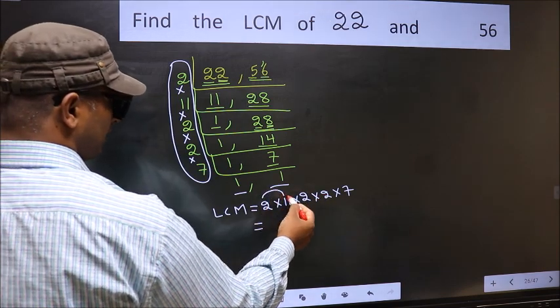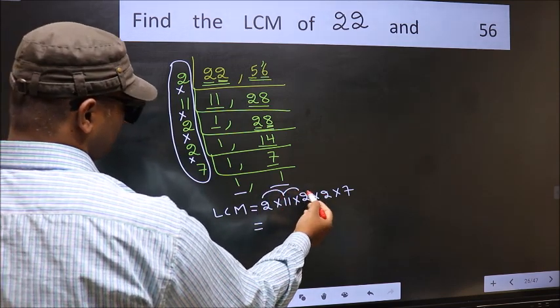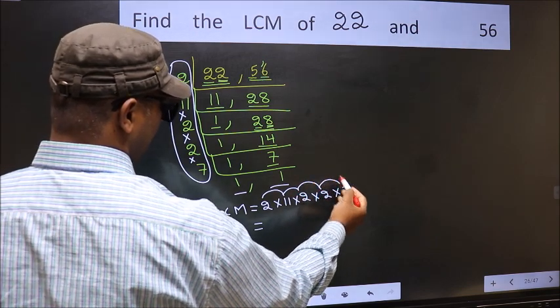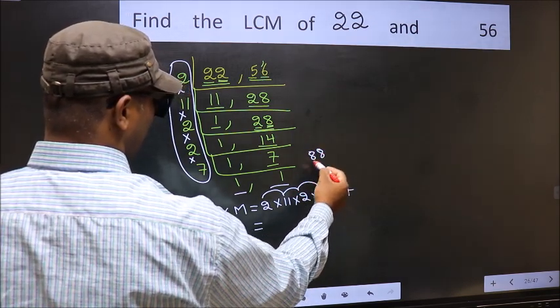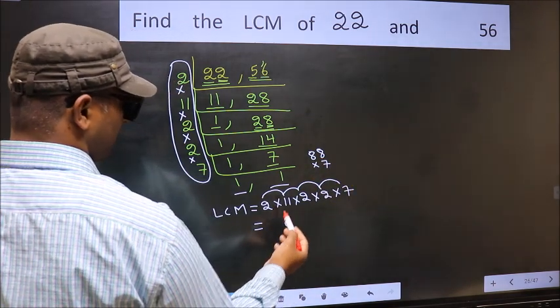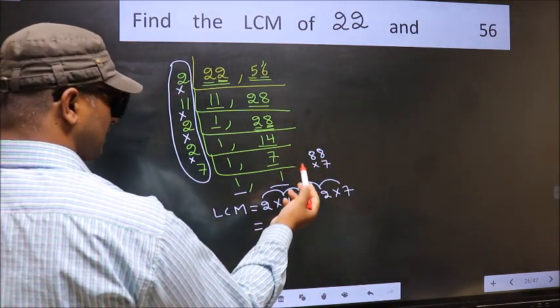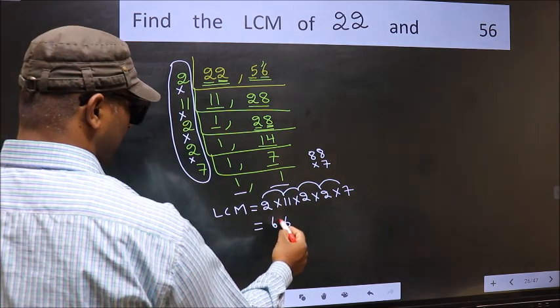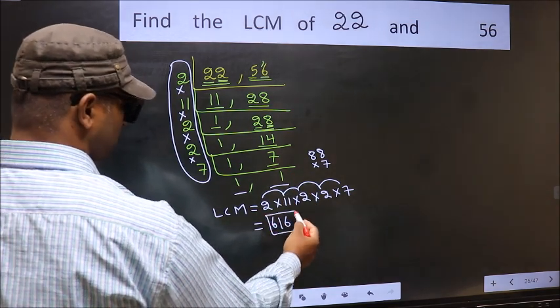2 into 11 is 22. 22 into 2 is 44. 44 into 2 is 88. 88 into 7: 7 times 8 is 56, carry 5. 7 times 8 is 56 plus 5 is 61. So 616 is our LCM.